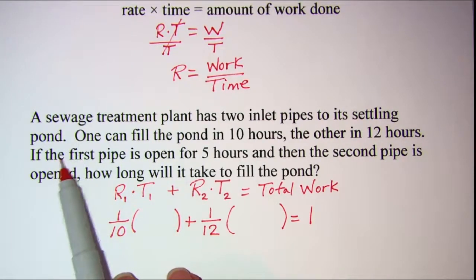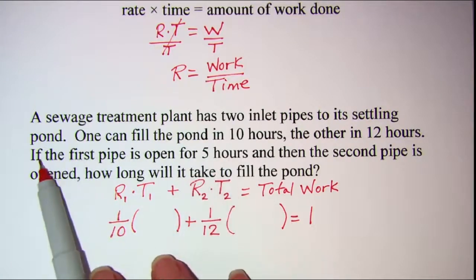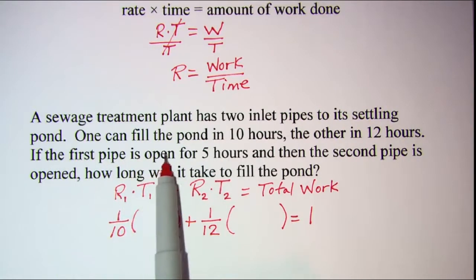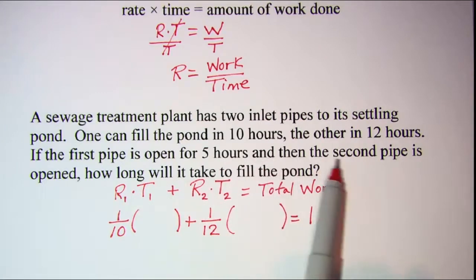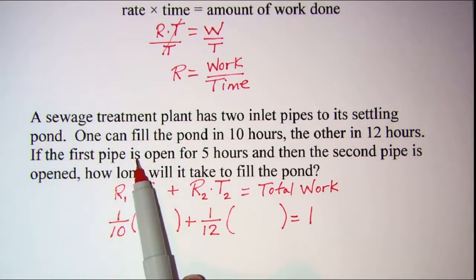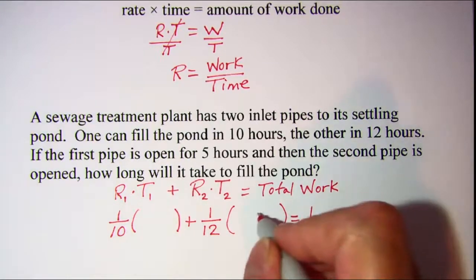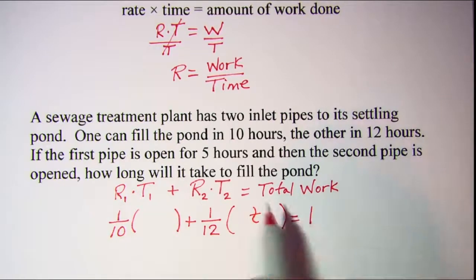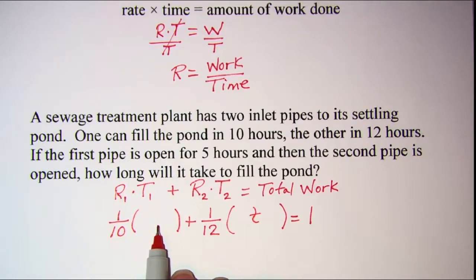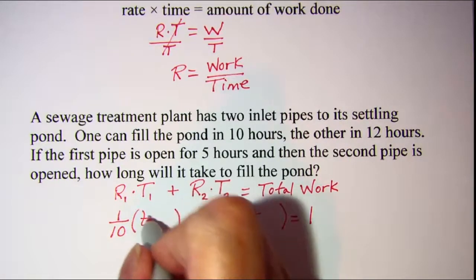Now this sentence right here will indicate the time that these pipes are open. It says the first pipe is open for 5 hours, and then the second pipe is opened. So the first pipe is open longer, and in fact the first pipe is open 5 hours longer. So I'm going to let t be the amount of time that the second pipe is open, and then the first pipe has to be 5 hours longer than that. So this will be t plus 5.